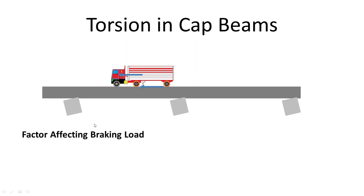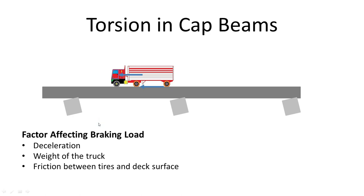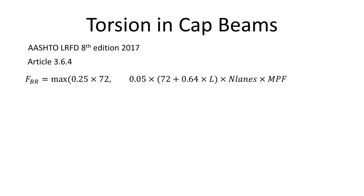The amount of inertial force transferred from the truck to the bridge deck depends on many factors, such as deceleration, weight of the truck, and friction between the tires and the deck surface. Research has been able to quantify these factors, and as a result we can compute the braking loads as per AASHTO article 3.6.4, which states that braking load is the maximum of 25% of the truck load, or 5% of the truck load plus lane load, multiplied by the number of lanes and the multiple presence factor. 25% of the truck load is greater than 5% of the truck plus lane load for bridges less than 450 feet in length.